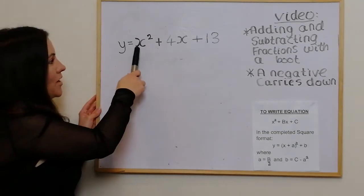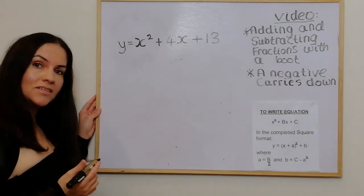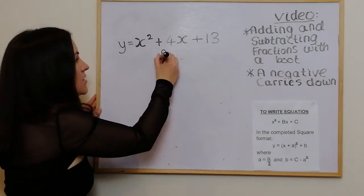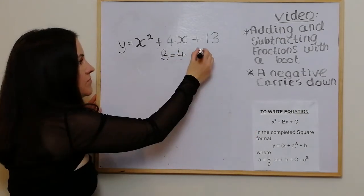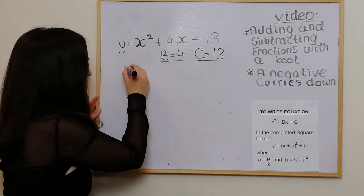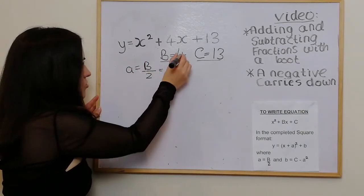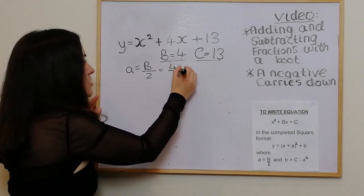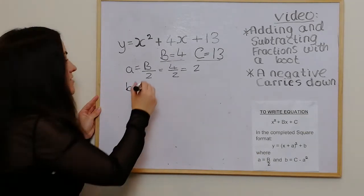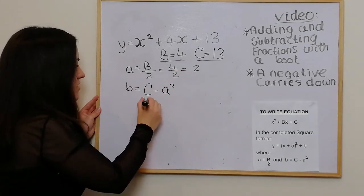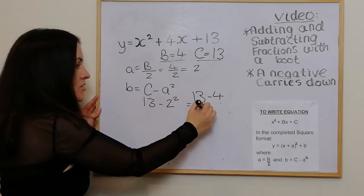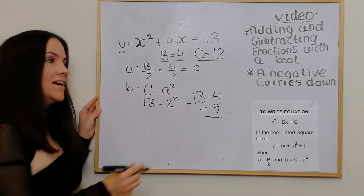In our next example, y equals x² + 4x + 13. We determine b and c first: b is 4 and c is 13. To get little a, it's b over 2, so 4 over 2 which is 2. Then to get little b, we do c minus a squared. C is 13 and a is 2, so it's 13 take away 2 squared, which is 13 take away 4, giving us 9. So b is 9 and a is 2.